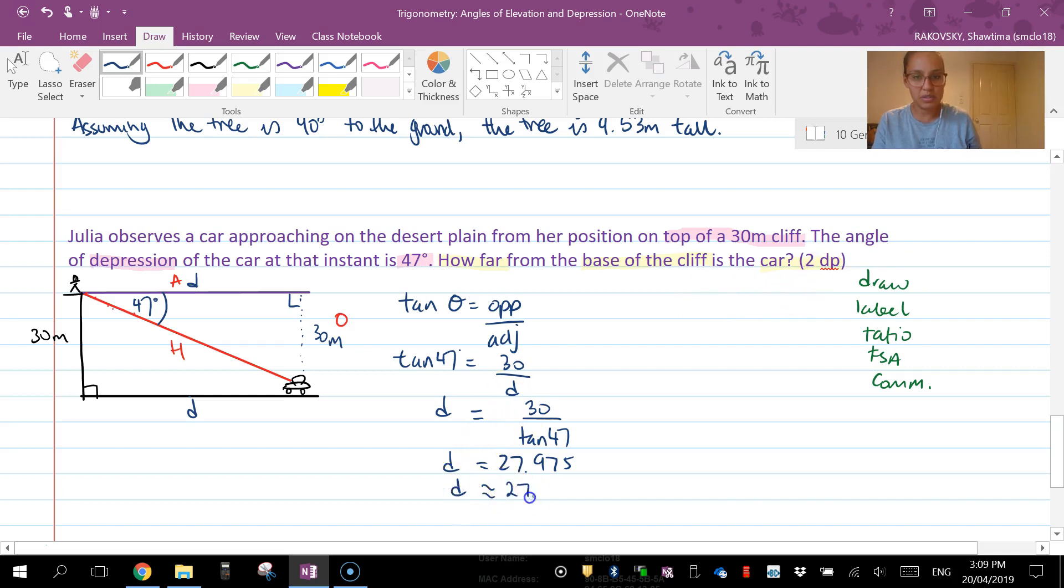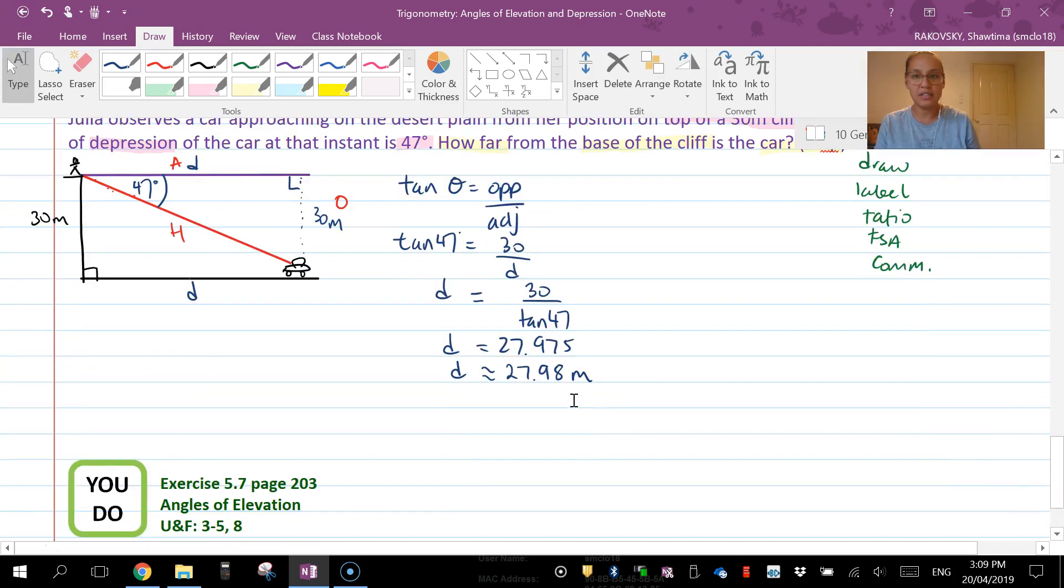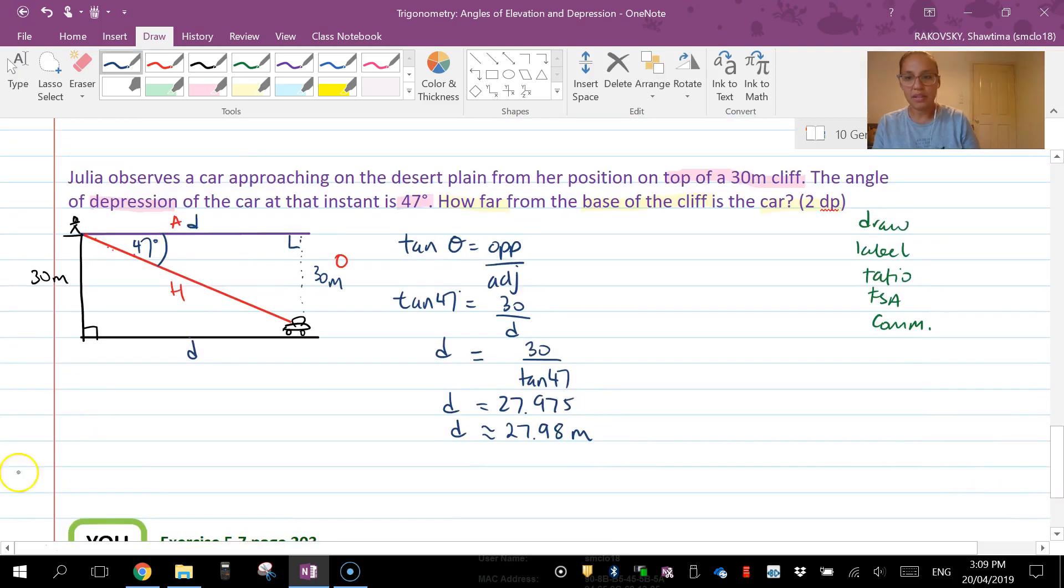D is going to be 27.97, which to two decimal places is going to be D equals 27.98 meters. So then I would do that in context.